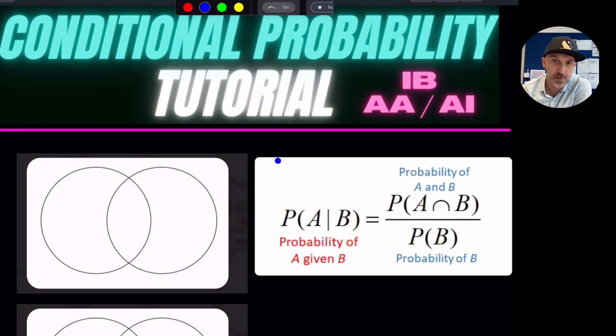The first one that we'll just highlight here is the conditional probability formula. So it is the probability of A given B can be found by the probability of A and B over the probability of B.